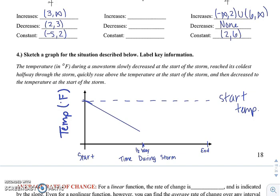And then it says quickly rose above the temperature at the start. So if I know where the start is, quickly would be a steeper slope, and it's going to be above that start temperature, and then decreased to the temperature at the start of the storm. So by the end of the storm, it was back at the temperature where it started.